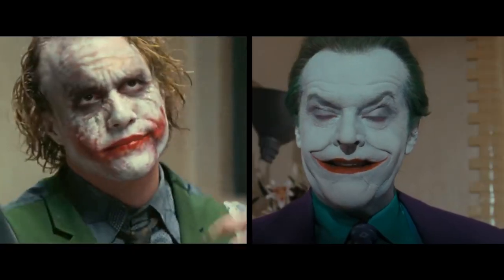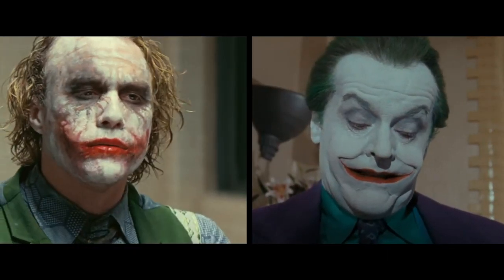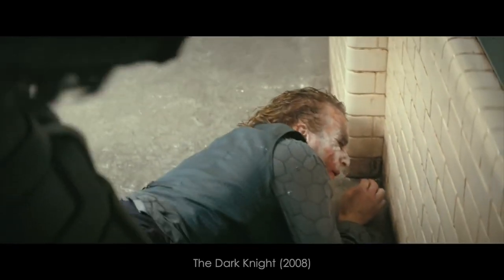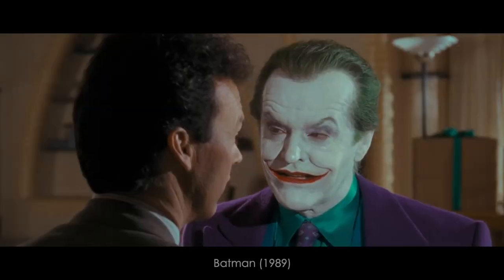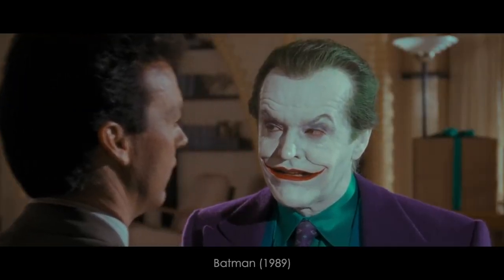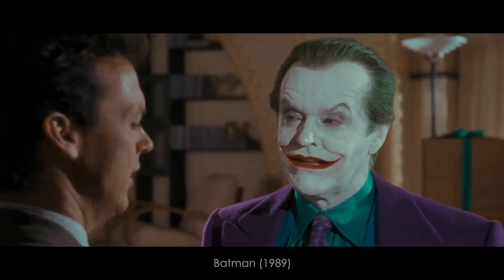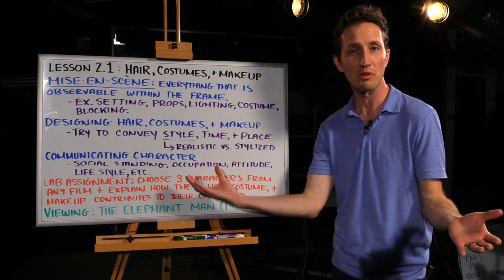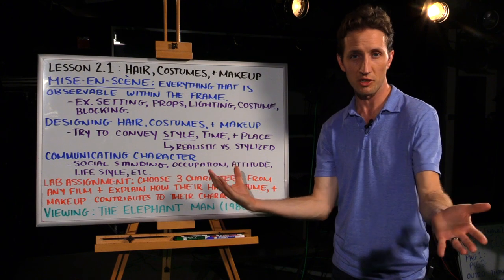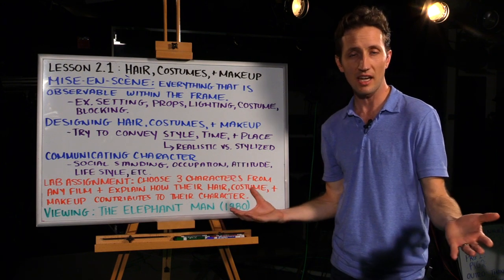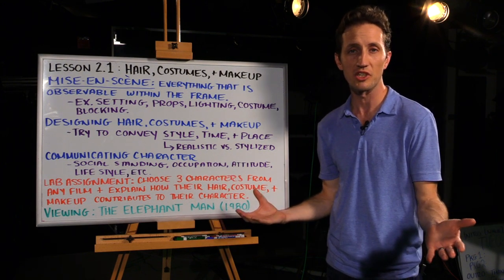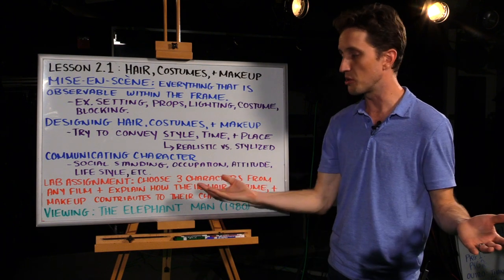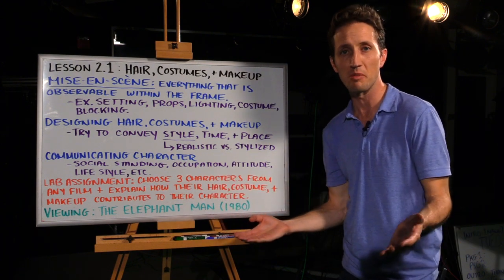So we have two different actors in two different films playing the same character, but notice how in each example the hair, costume, and makeup tells the audience two very different ideas for how these characters are meant to be portrayed — the very realistic Joker in Christopher Nolan's version, and the very stylized version in Tim Burton's version. You can also communicate character through hair, costume, and makeup.